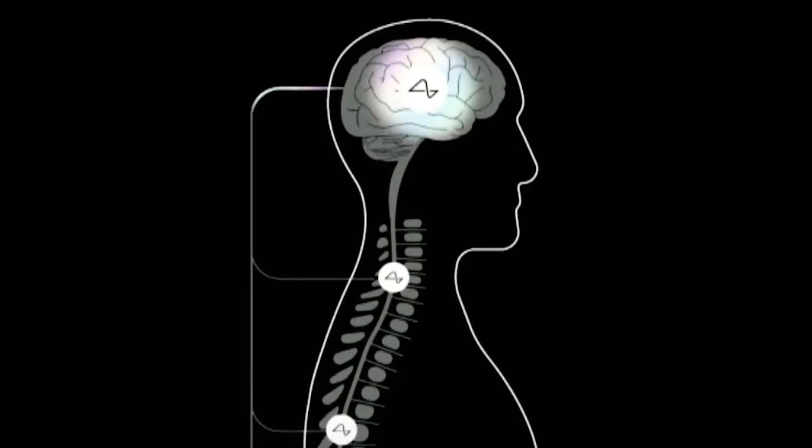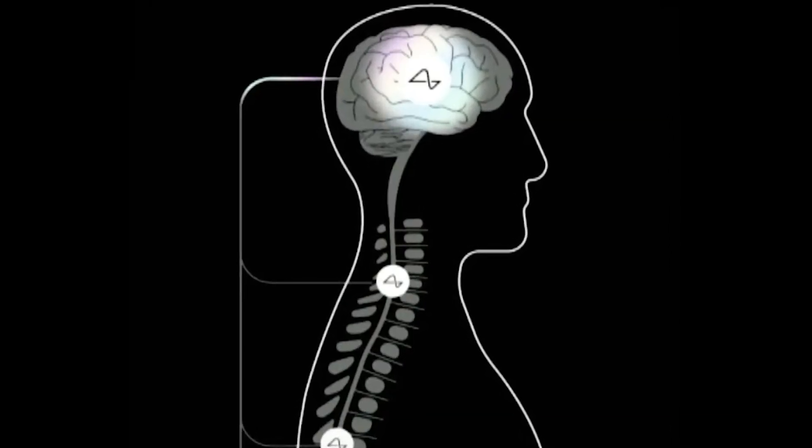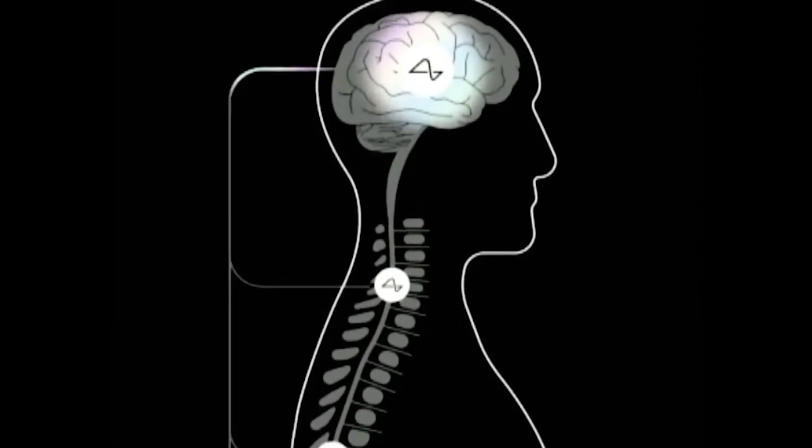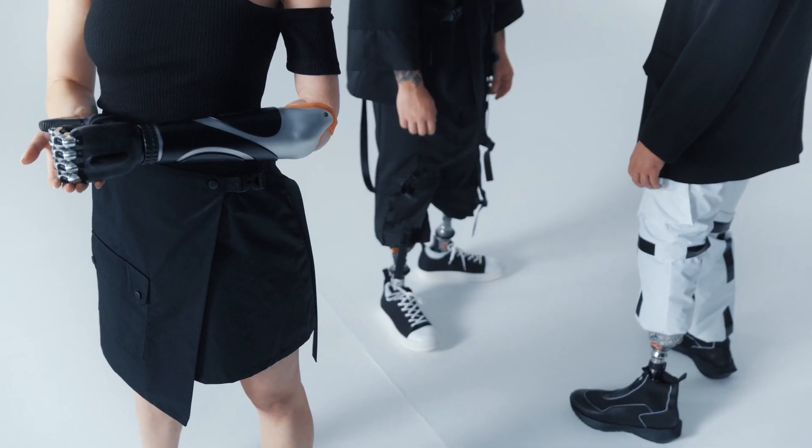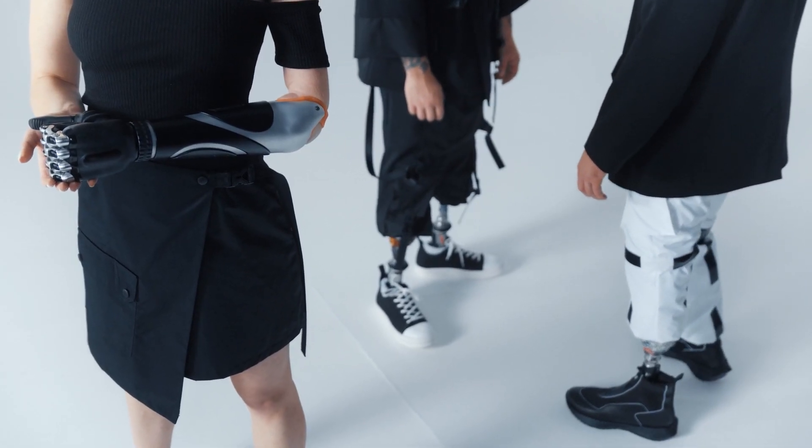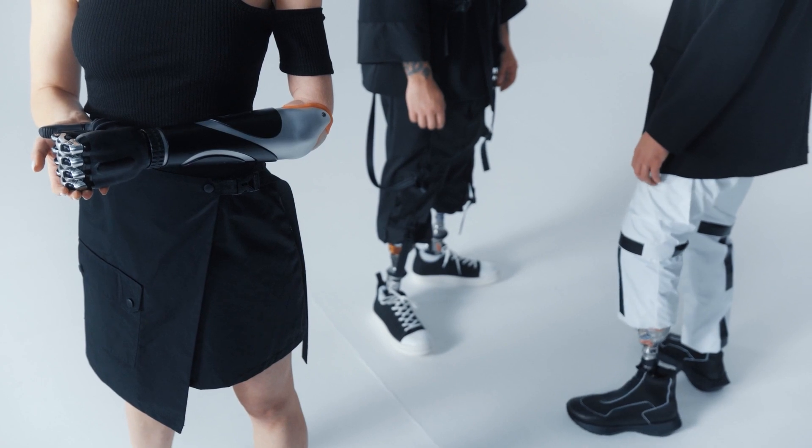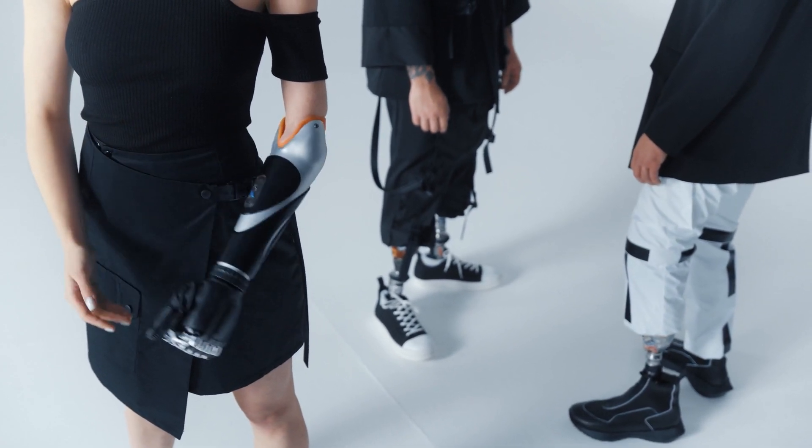For individuals with spinal cord injuries or paralysis, Neuralink holds the promise of restoring mobility. By bypassing damaged neural pathways, it could allow them to control robotic limbs or even regain control of their own bodies.